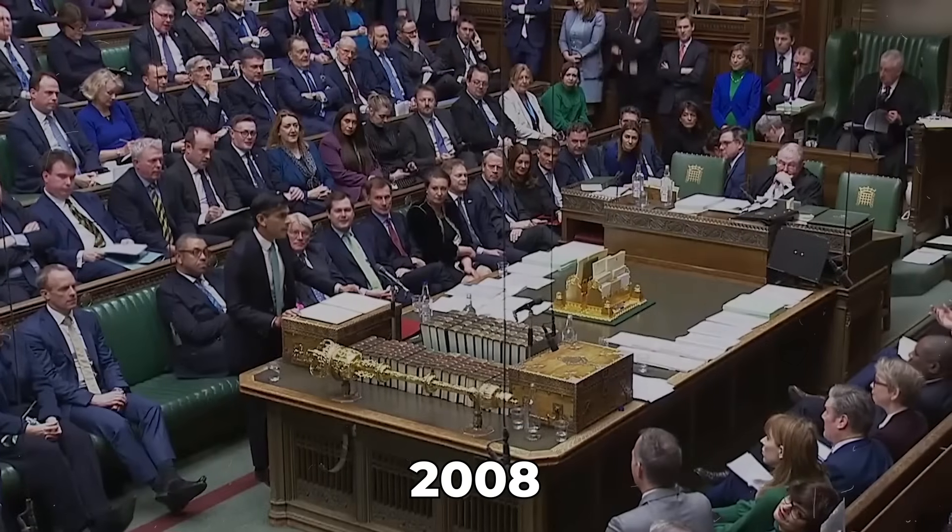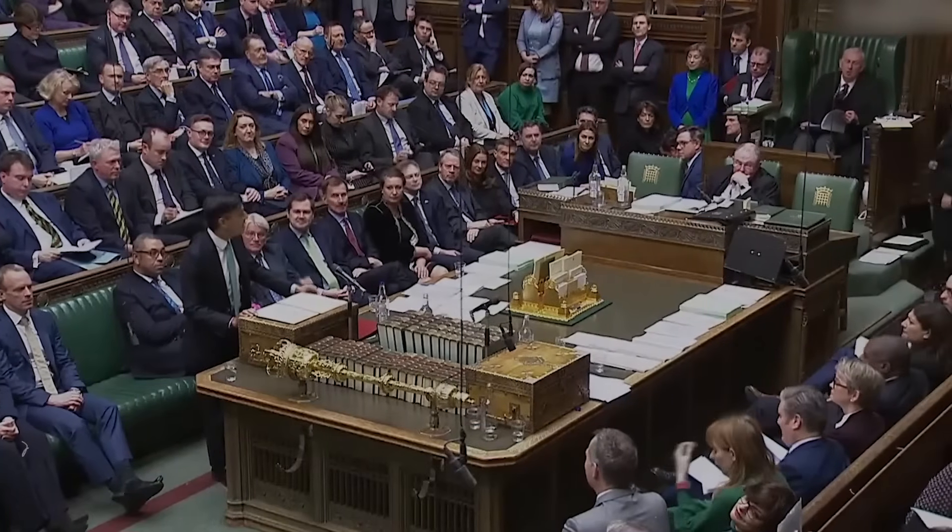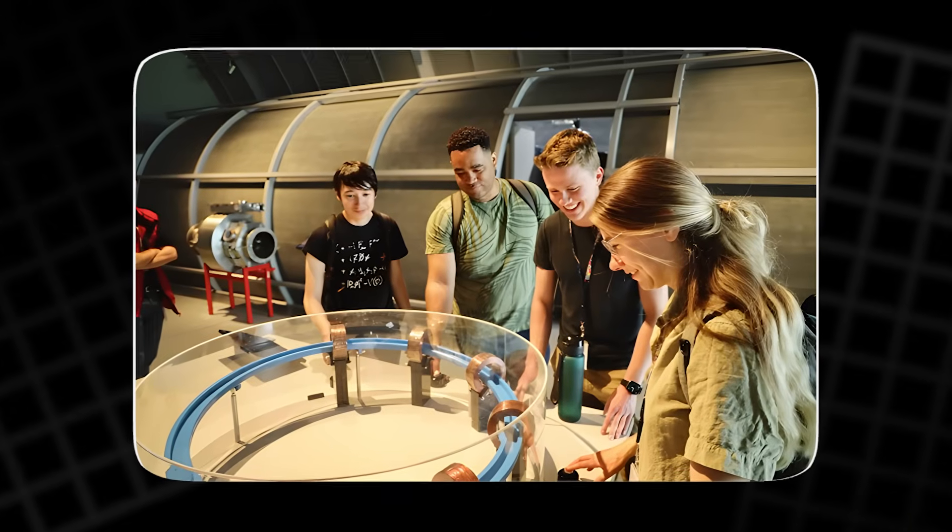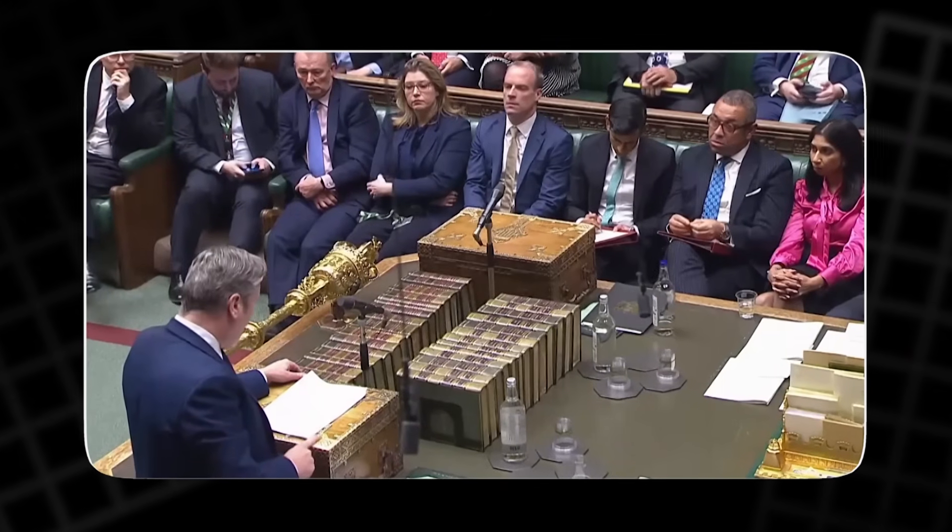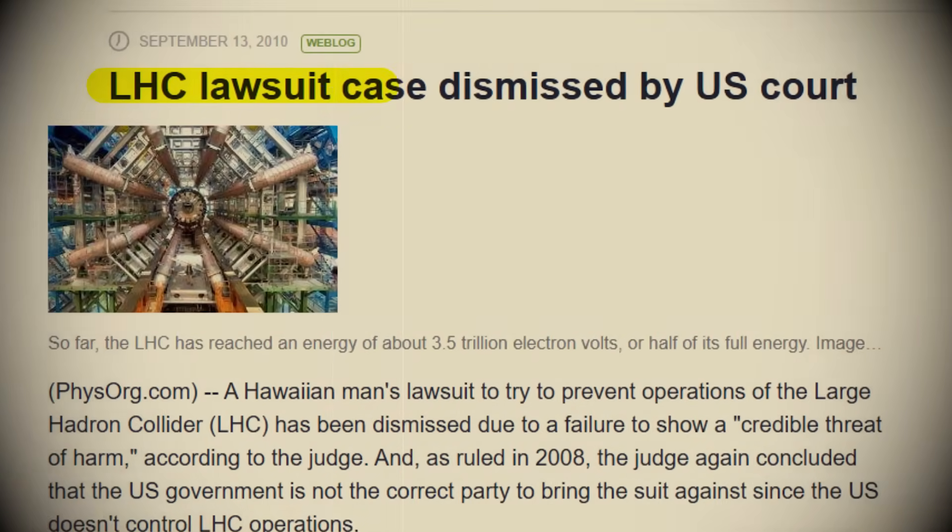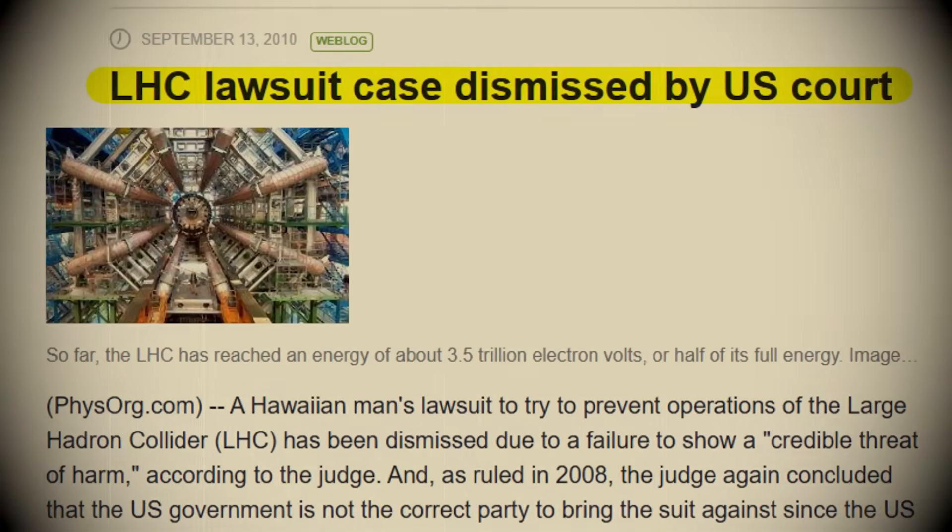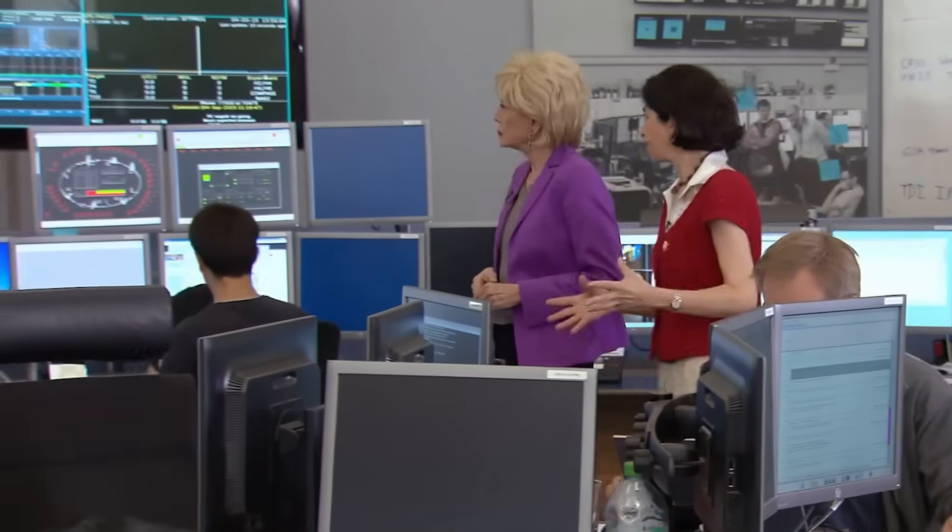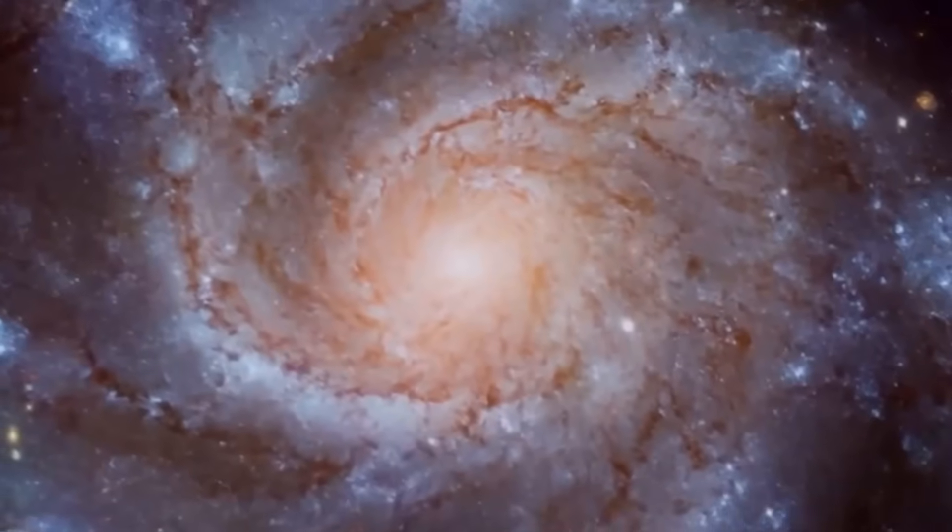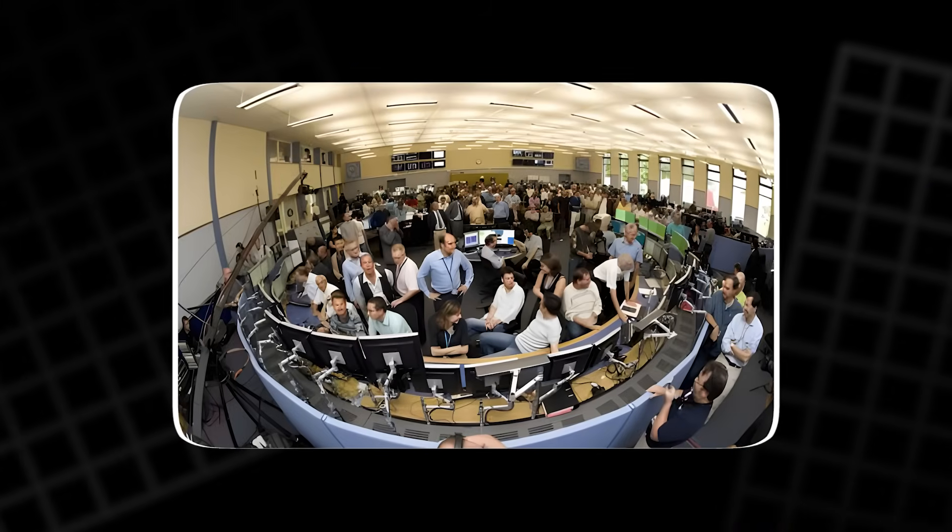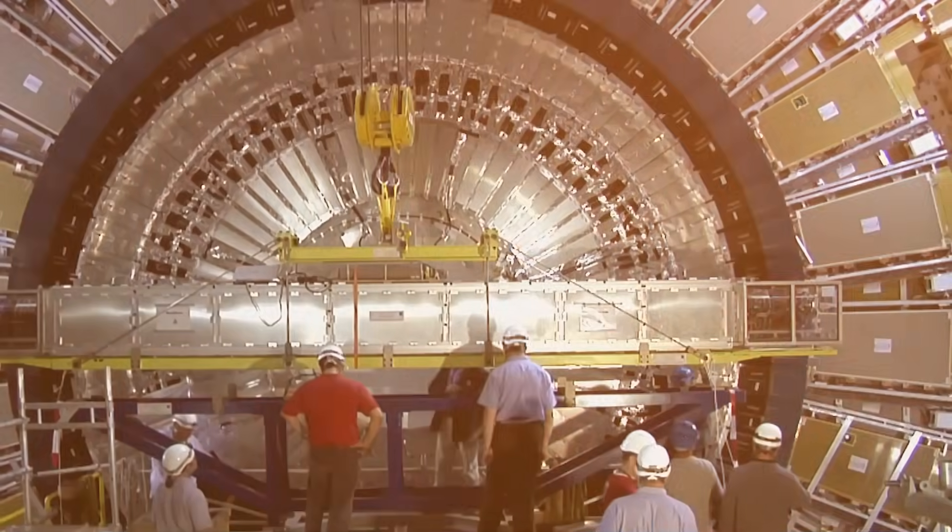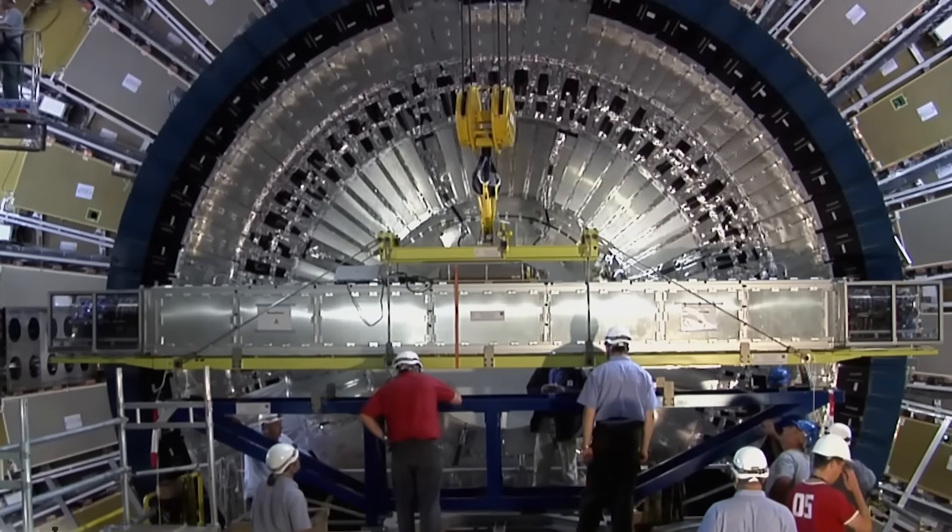In 2008, formal legal complaints were filed in European courts to stop CERN from turning on the collider. The argument? Even if the chance was extremely small, the risk was unacceptable. Although such cases were dismissed, the notion that Earth's most advanced laboratory might inadvertently create a black hole struck deep anxiety into the public, and even unsettled some experts.